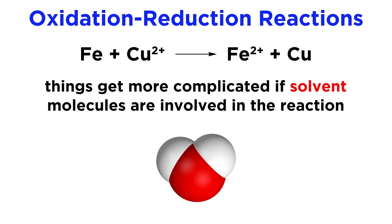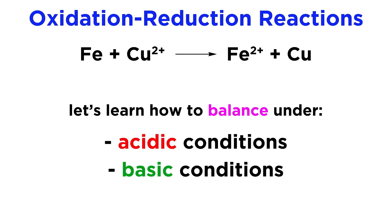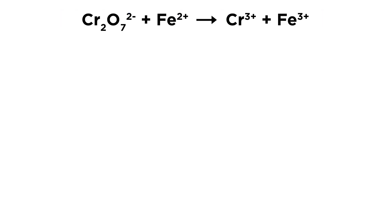But redox reactions can become more complicated if molecules of solvent are involved in the chemical reaction, as water molecules can be if the reaction is carried out in aqueous solution. Hydrogen atoms or oxygen atoms from water molecules can be incorporated into these substances, which will make it a little trickier to balance the corresponding equations. Let's learn how to balance these kinds of redox reactions now, considering both acidic and basic conditions, as the approach will differ slightly for these scenarios. For example, in aqueous solution the dichromate ion will react with iron 2+ to yield chromium 3+ and iron 3+.